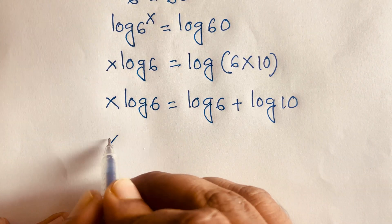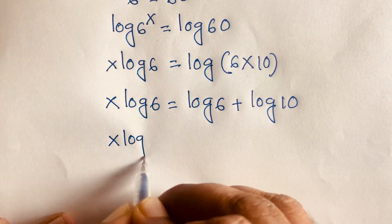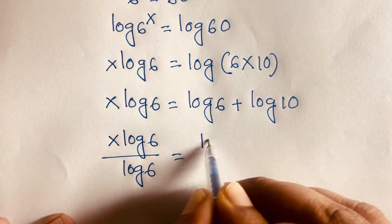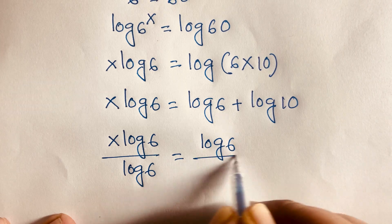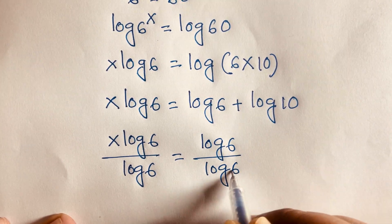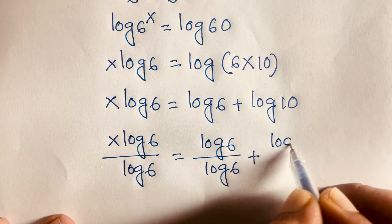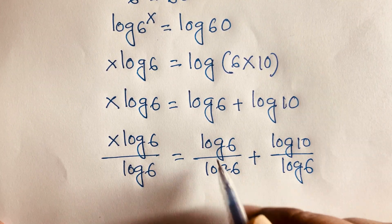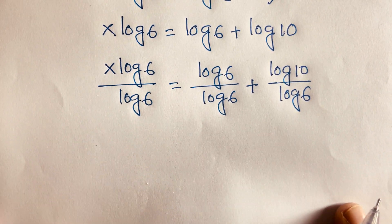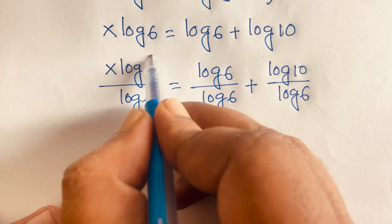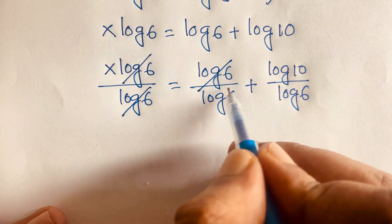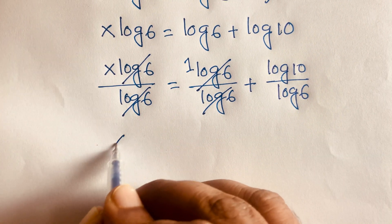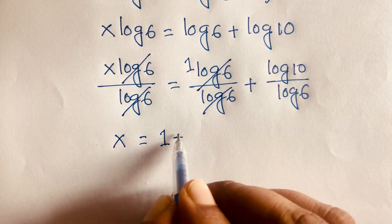So x·log 6 divided by log 6 is equal to log 6 divided by log 6, plus log 10 divided by log 6. The log 6 terms cancel, leaving 1. So x is equal to 1 plus log 10 over log 6.